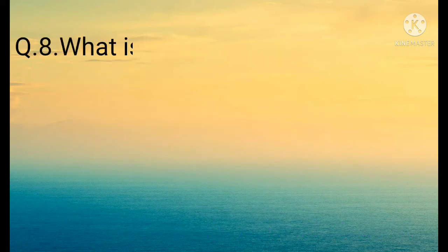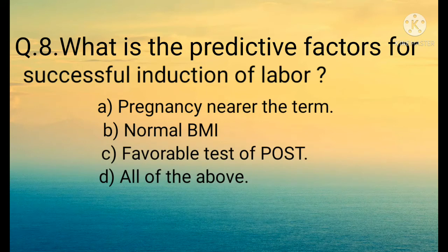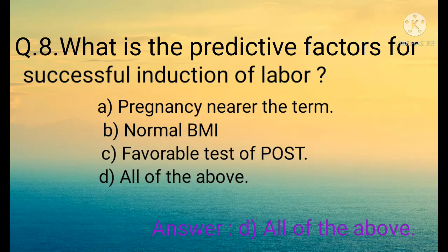Question number eight: What is the predictive factor for successful induction of labor? Option A: Pregnancy nearer the term, Option B: Normal BMI (body mass index), Option C: Favorable result of POST (positive oxytocin sensitivity test), Option D: All of the above. The correct option is Option D: All of the above.